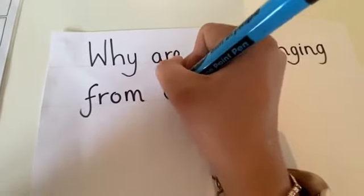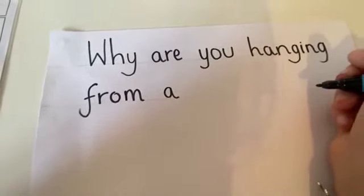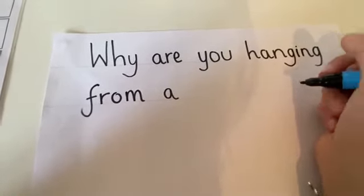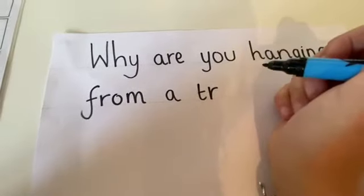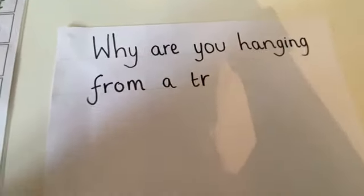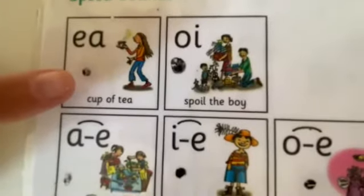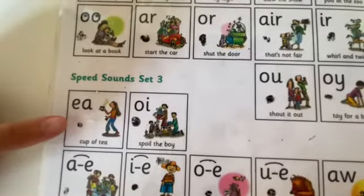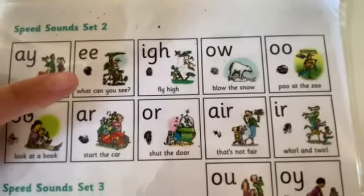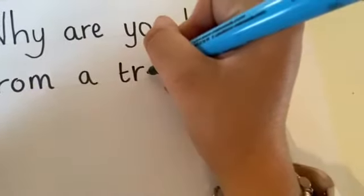From a tree. Tree. What sound can you hear? T, tr, r, tree. I wonder what e sound we need to use. Do you think we use e, what can you see? Or e, cup of tea? We use the e, what can you see sound. T, r, e. Tree.